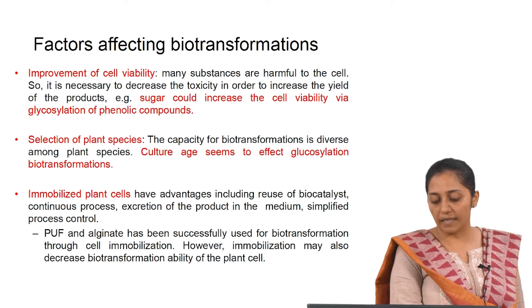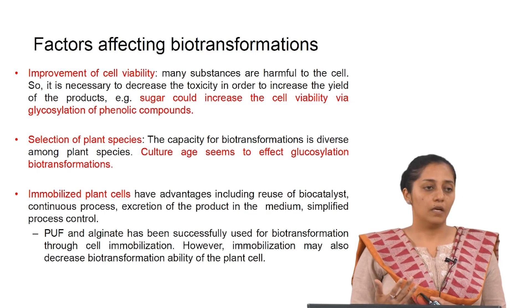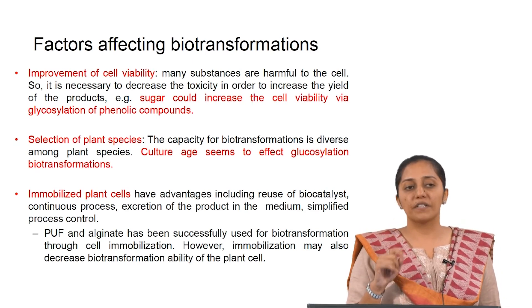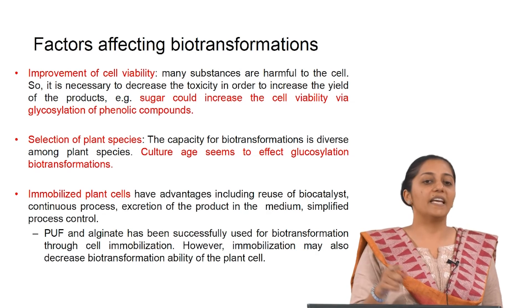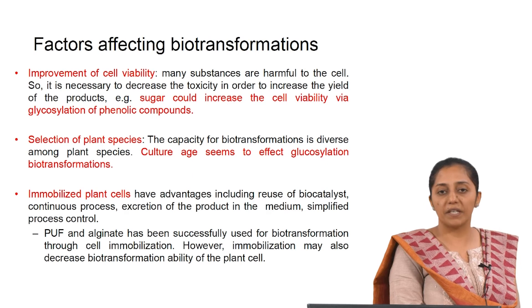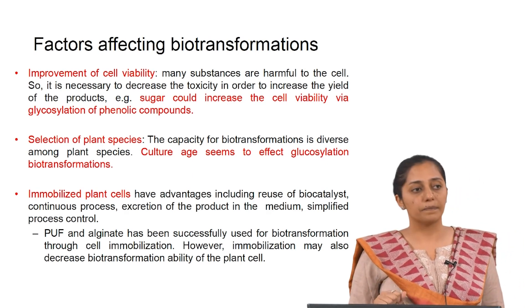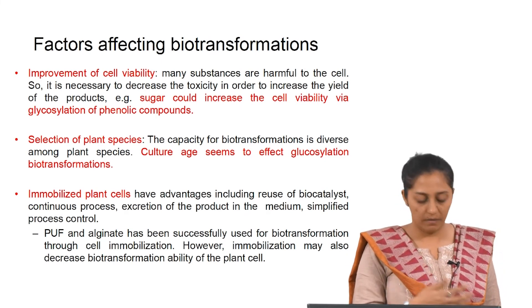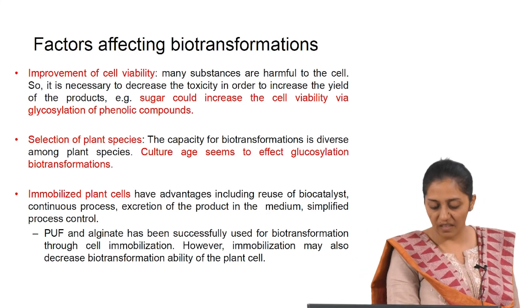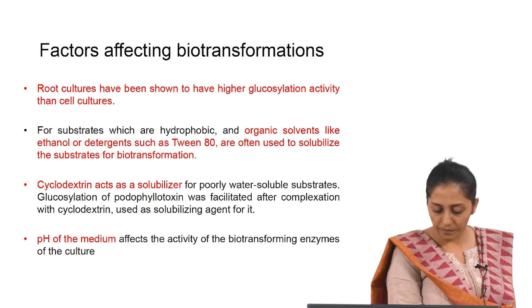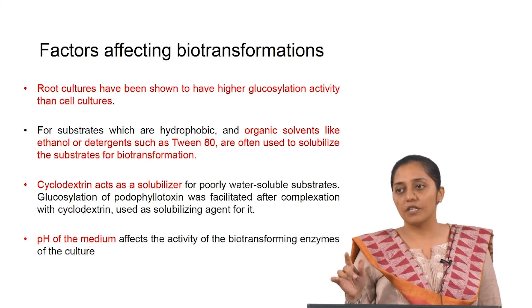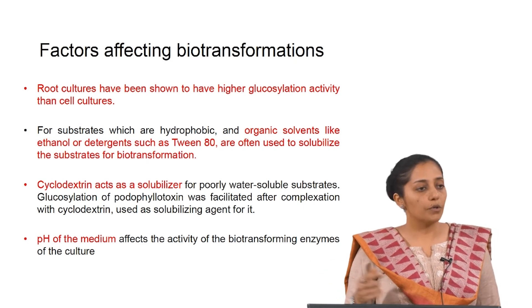Immobilization of plant cells has advantages: reuse of the biological catalyst is possible, making the process continuous. The prerequisite is that the product must be excreted out. Immobilization materials include PUF — polyurethane foam — an inert material that has been successfully used to immobilize plant cells. Care must be taken when selecting the material depending on the species being worked with.